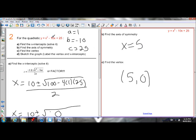And if I plug 5 into this equation, I get 25 minus 10 times 5, which is 50. So 25 minus 50 is negative 25, plus 25 is 0. There's the y-coordinate. So this is a shortcut.